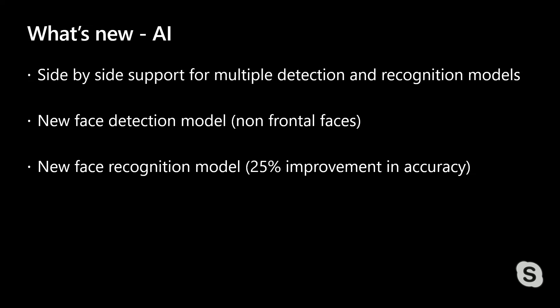Number two: while the Face API works well for frontal faces, non-frontal faces or small faces would not always be detected. So we've added a new detection model specifically trained to find faces that are non-frontal, very small, or partially occluded.